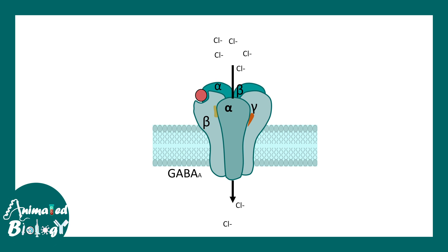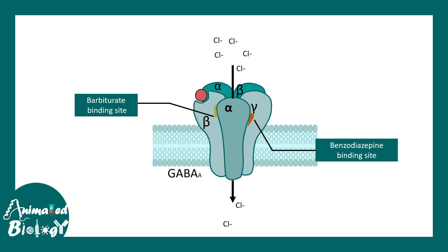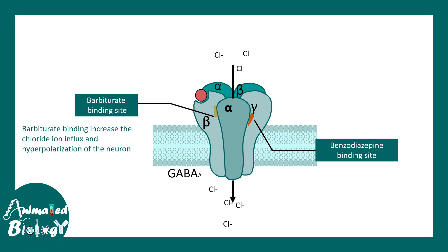There are two different sites other than the GABA binding sites in the GABAergic receptor. The site in orange, at the interface of the alpha and gamma subunit, is the benzodiazepine binding site, and the interface between the alpha and beta subunit is the barbiturate binding site. Barbiturates bind to this particular site.